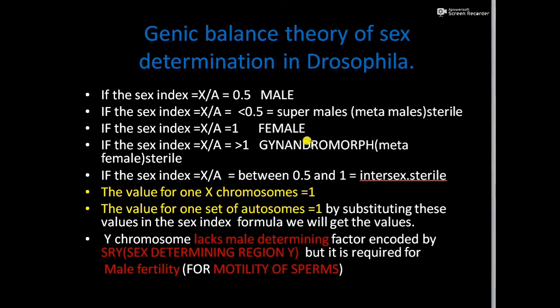A gynandro morph contains the characters of both male and female, so it is also sterile. If the sex index ratio X/A is between 0.5 and 1, then the sex is intersex, which is also a sterile individual.